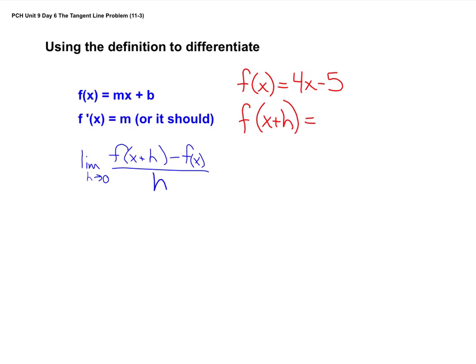All right, so let's take a quick look at one that we should be able to know, okay? We said that the derivative gives us the slope of a function at a specific point, okay? Now, if I have the function f of x equals 4x minus 5, the derivative should equal what? 4. 4, okay? Because the slope of this line is the same no matter what point I'm at. Okay, that's what makes it straight, is that the slope stays the same.